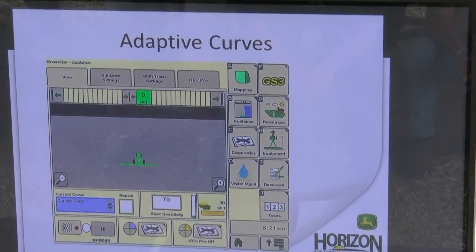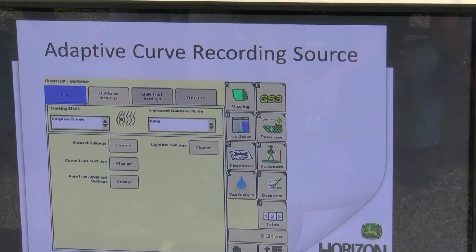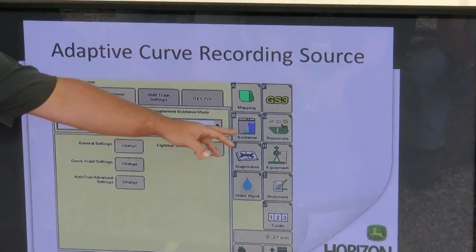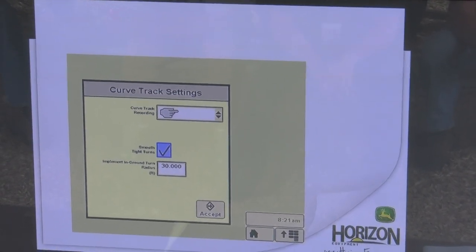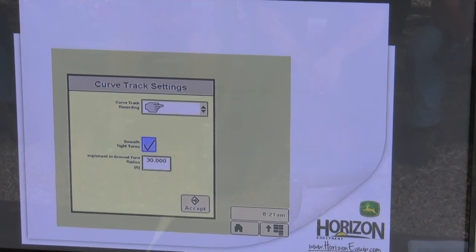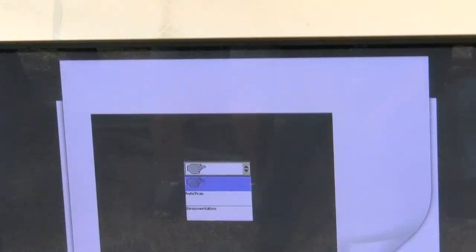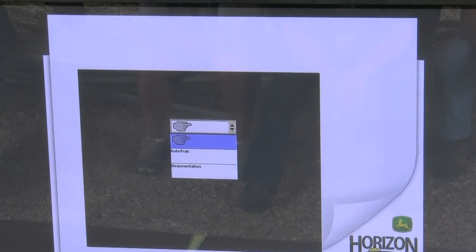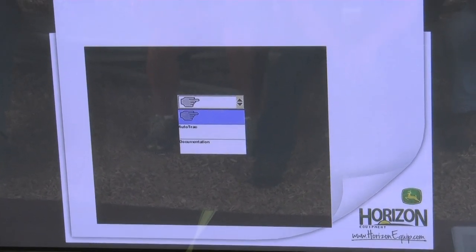Everybody runs adaptive curves, right? Pretty simple, easy to set up. With our adaptive curves, how many of you guys change the recording source that you use? As we come into menu, Green Star, guidance, guidance settings, we're going to come in here to curve track settings. The recording source is set on our finger, which is going to be manual. A lot of times we go in there, we hit record and we start going. Every turn, everything, you get all those lines all over the field. We have two different options that we can get rid of those turns. Our first one is going to be auto track. On the auto track recording source, it will only document a line while auto track is engaged. The moment you disengage auto track, that line stops being created.